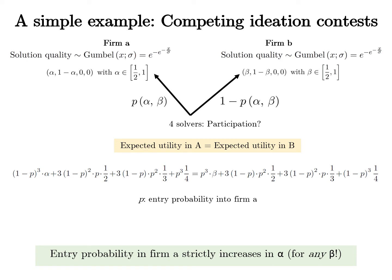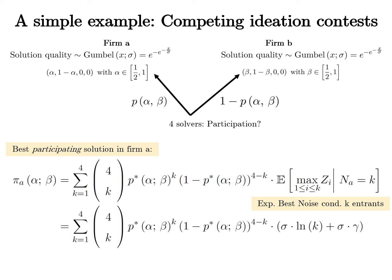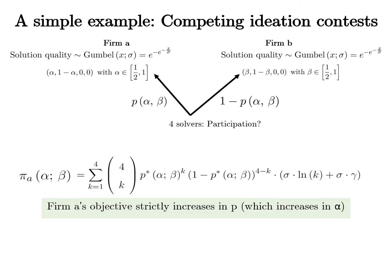So the entry probability into contest A strictly increases in the top prize it offers. Firm A offers prizes to maximize the expected best participating solution in its contest. By the law of total probability, this is the expected best solution conditional on k equals 1, 2, 3, or 4 participants multiplied by the probability of each event. This objective strictly increases in the entry probability — the more solvers that enter, the higher the expected best solution.